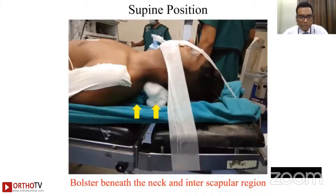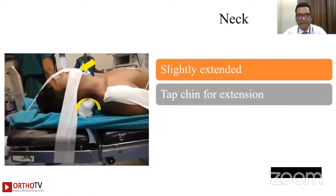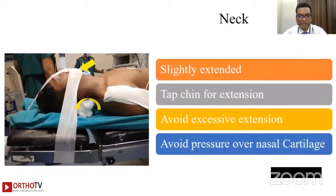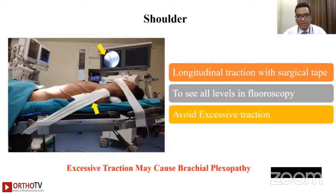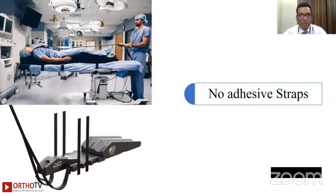For the supine position, the bolster has to be beneath the neck and the interscapular region. The head must be well stabilized with good padding over the occiput — we prefer a gel pad to release pressure. The neck should be slightly extended; tape the chin for extension but avoid excessive extension and avoid pressure on the nasal cartilage. Custom bone foam products are now available with a made-to-measure interscapular pillow and knee support.